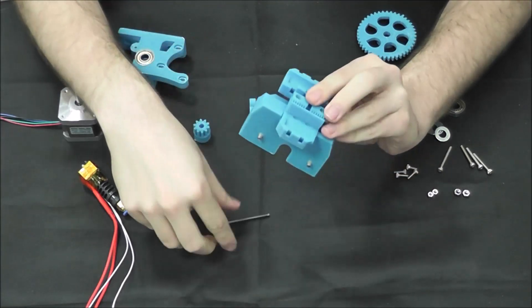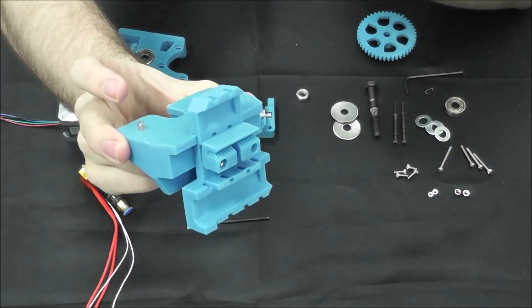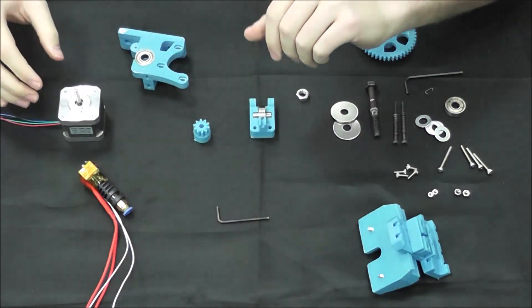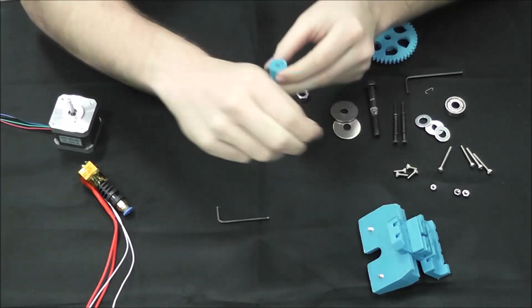All right, so we have the X carriage and extruder adapter assembled together. Now we're going to set that off to the side and put our small gear on the motor to save us some trouble later.